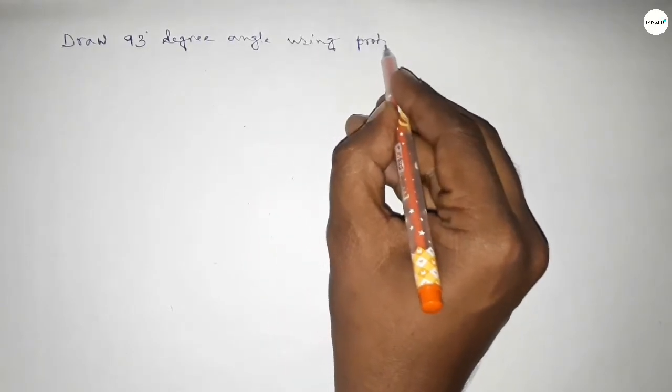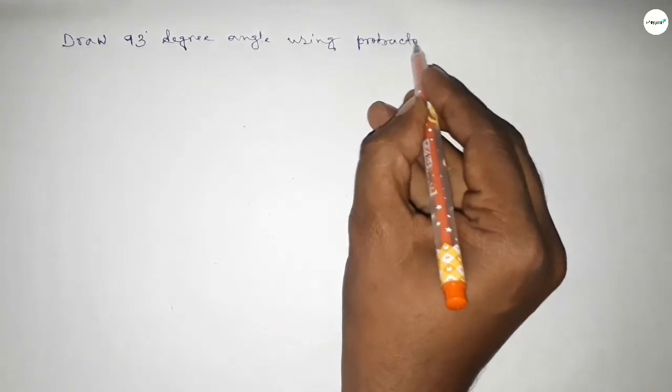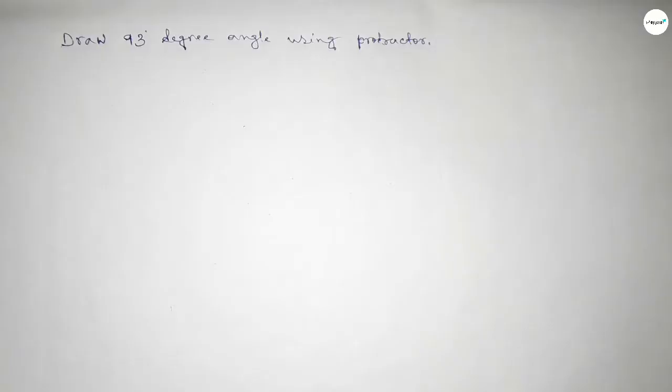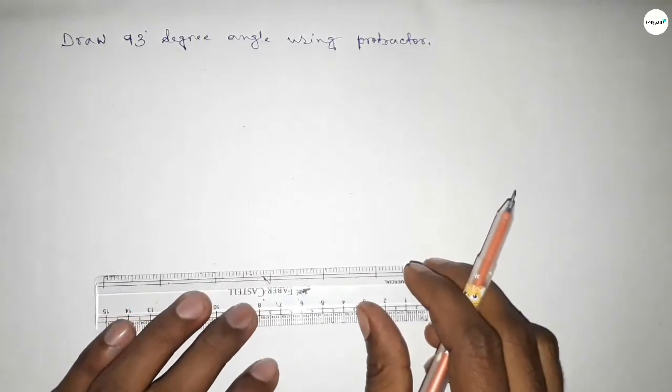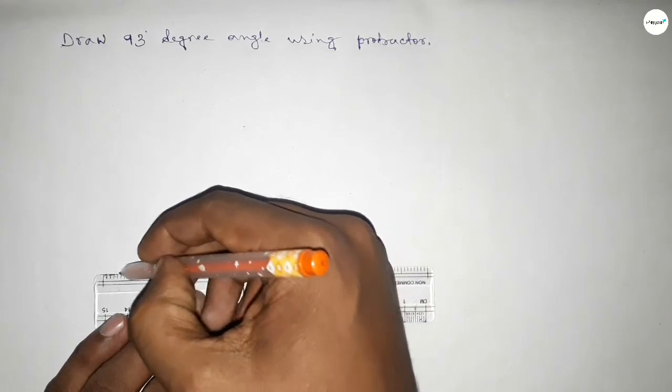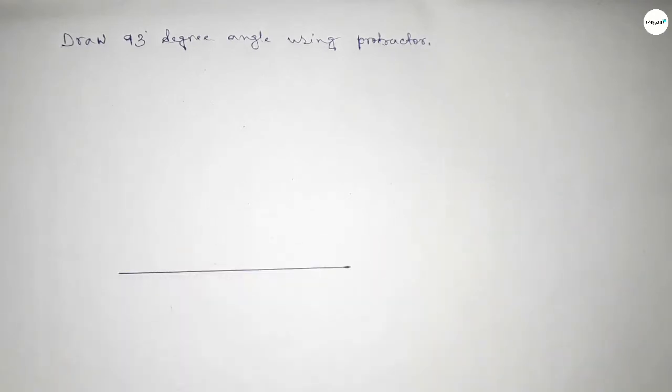So constructing 93 degree angle, let's start the video. First of all, we have to draw here a straight line of any length. So first drawing here a line, next taking here B point and here C point.